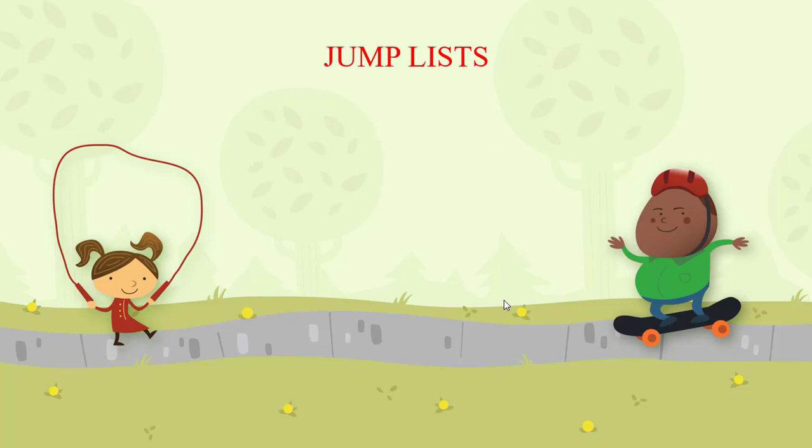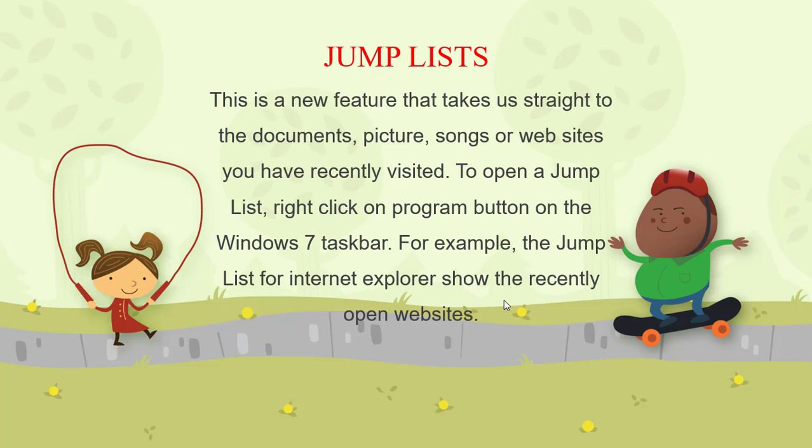The next feature is Jump Lists. This is a new feature that takes us straight to the documents, pictures, songs, or websites we have recently visited. To open a Jump List, right-click on a program button on the Windows 7 taskbar. For example, the Jump List for Internet Explorer shows recently opened websites. Just like in a browser where recently visited websites appear in tabs, you can directly click to open any recently visited website — that is an example of a Jump List.